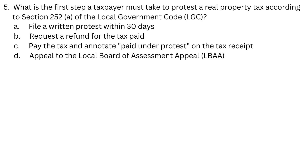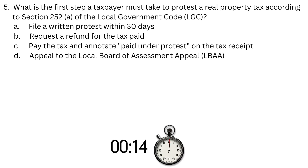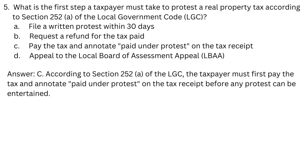Number 5. What is the first step a taxpayer must take to protest a real property tax according to Section 252 paragraph A of the Local Government Code? A. File a written protest within 30 days. B. Request a refund for the tax paid. C. Pay the tax and annotate 'paid under protest' on the tax receipt. D. Appeal to the local board of assessment appeal. Answer: C. According to Section 252 paragraph A of the LGC, the taxpayer must first pay the tax and annotate 'paid under protest' on the tax receipt before any protest can be entertained.